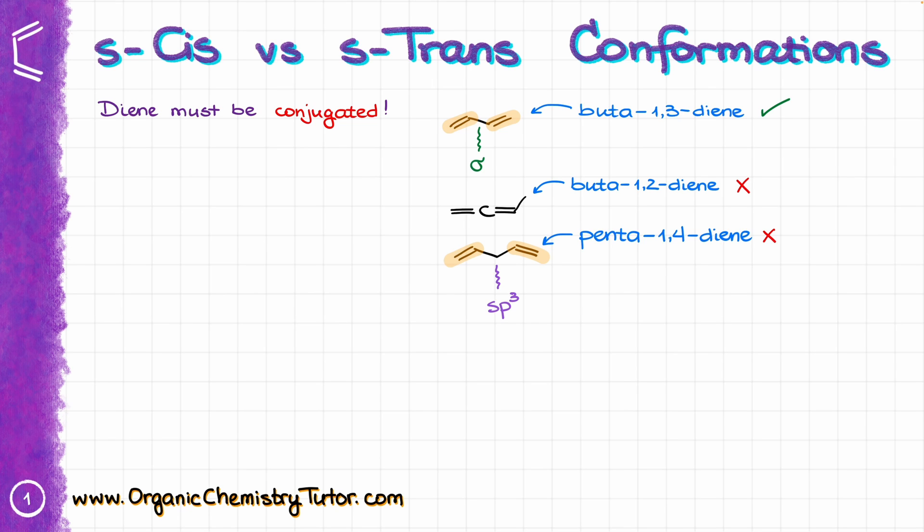The next requirement is probably the most confusing one for a lot of students, and that is the subject of our conversation today. The diene needs to be in or able to assume the s-cis conformation. First of all, let's look at the difference between the s-cis and the s-trans conformations. This is the s-cis conformation, while this is the s-trans conformation.